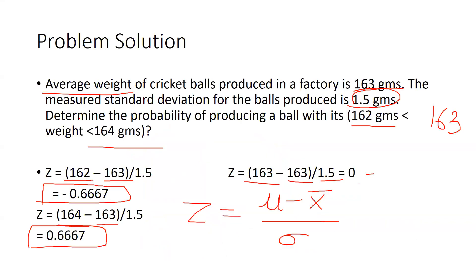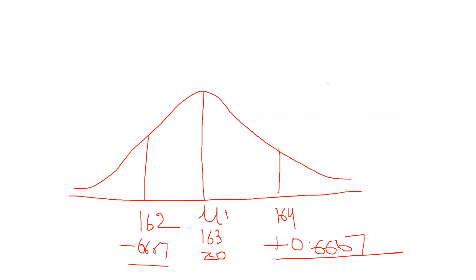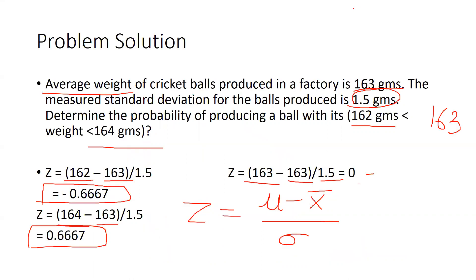So to summarize: the average weight of cricket balls is 163 grams, standard deviation is 1.5 grams, and we determine the probability of producing a ball weighing less than 162 grams, equal to 163 grams, and greater than 164 grams. We put all values into the formula one by one, then visualize on the normal probability curve. In the next video, I'll solve a more complicated problem involving z-value calculations. Keep watching, stay tuned — thank you.